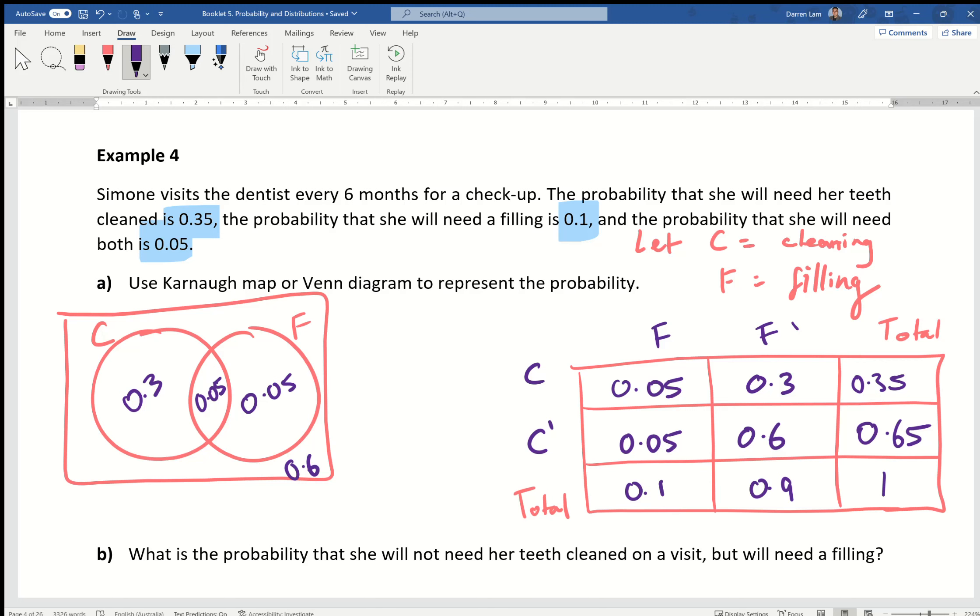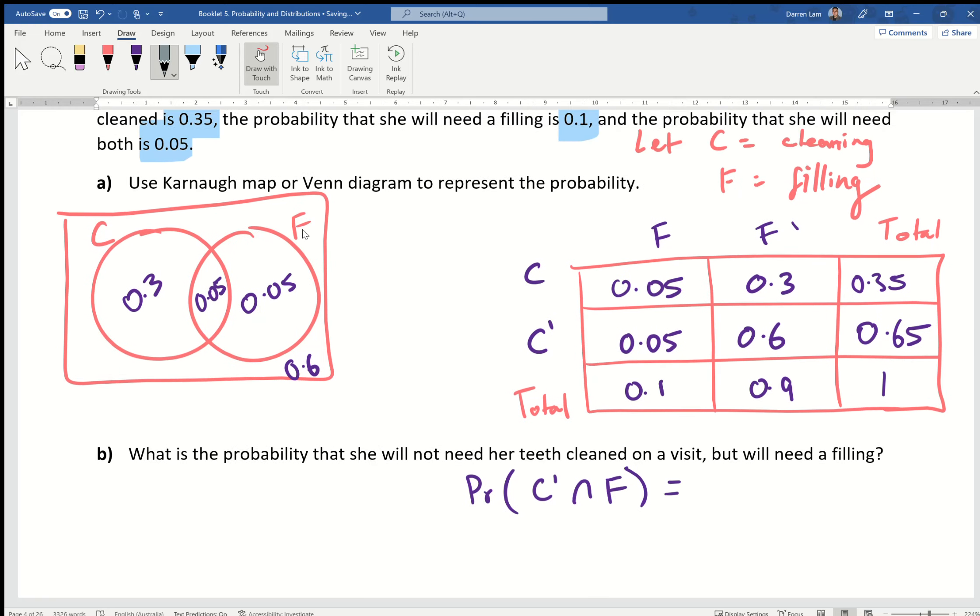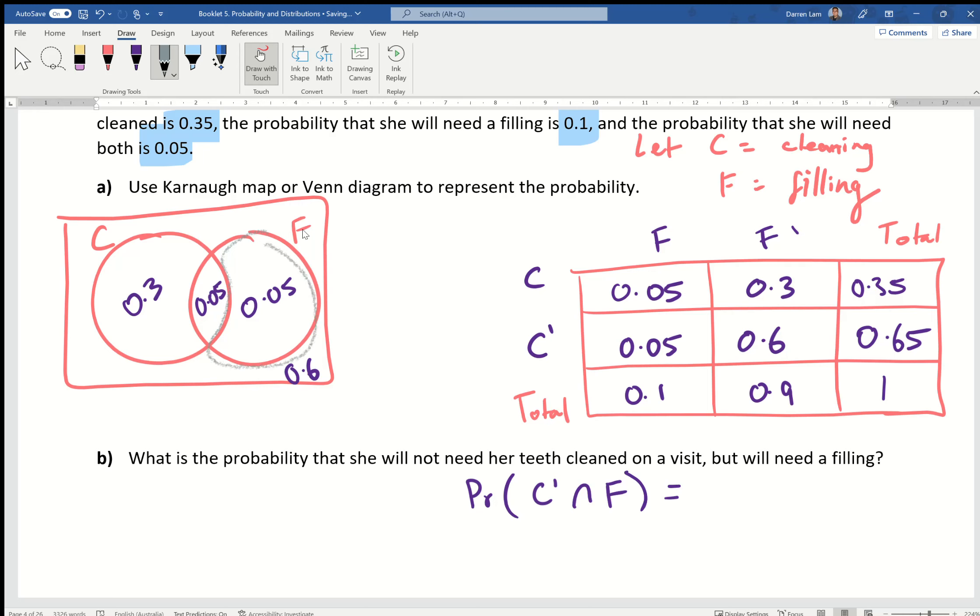What is the probability that she will not need her teeth cleaned, in other words C dash, but will need a filling? So if it says teeth not cleaned and needs a filling, is that intersection or union? Intersection. Because we're saying and needs a filling, not or needs a filling. So I'm going to write the probability of C dash intersecting with F. On the left hand side, it's not cleaning teeth but still being in F is going to be this one right here. On the right hand side, if you use a Karnaugh map, C dash is the second row intersecting with F, which is the first column, ends up with 0.05. Same answer: 0.05.